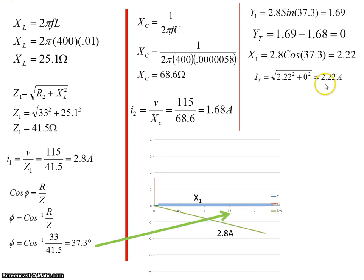Total current roughly 2.2 amps. And I have a phase angle of zero degrees. And then my power now is 253 watts. And that's the maximum amount of power we've had so far.